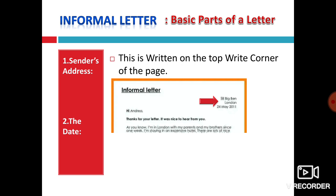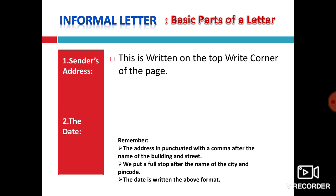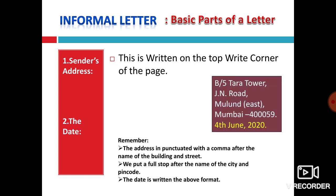This is written on the top right corner of the page. As you can see in the informal letter, in the top right side the address is written. Remember, the address is punctuated with a comma after the name of the building and street. We put a full stop after the name of the city and pin code. Here you can see B/5, that is the house number. Tara Tower, that means the building name. Then road name, then the town which we are living, then the city, and these six digits are the pin code. Even our Lonavala is having a pin code, 410401.